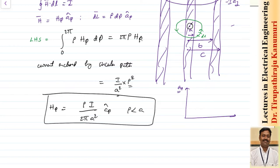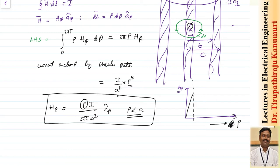For ρ less than A, H_φ = ρI / (2π A²) in the A_φ direction. Since A is fixed, H is directly proportional to ρ — as the distance increases, H increases. It reaches its maximum value on the surface at ρ = A, where it becomes I / (2π A), which equals I / (2π ρ) evaluated at the surface.